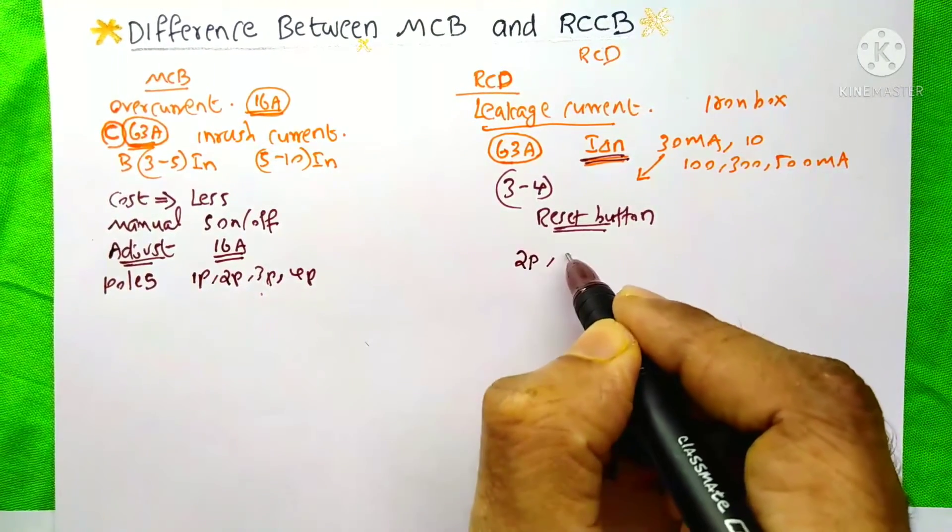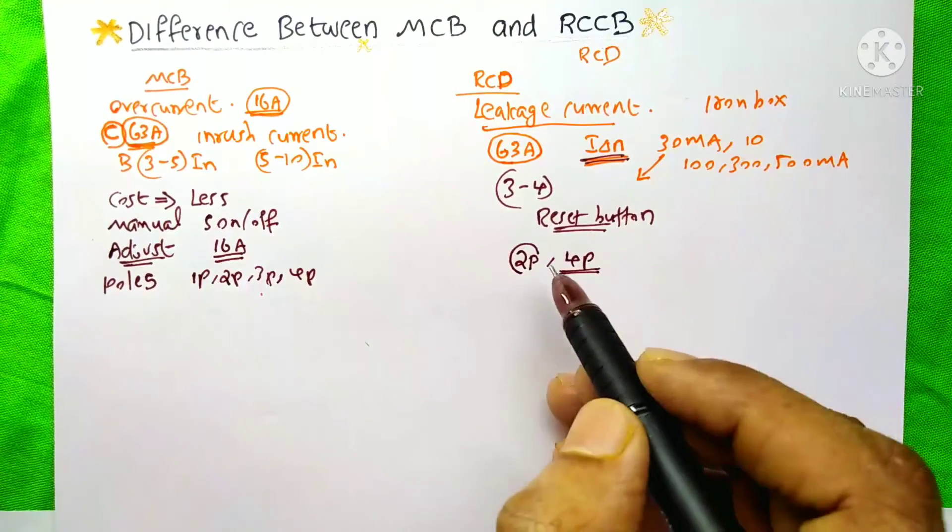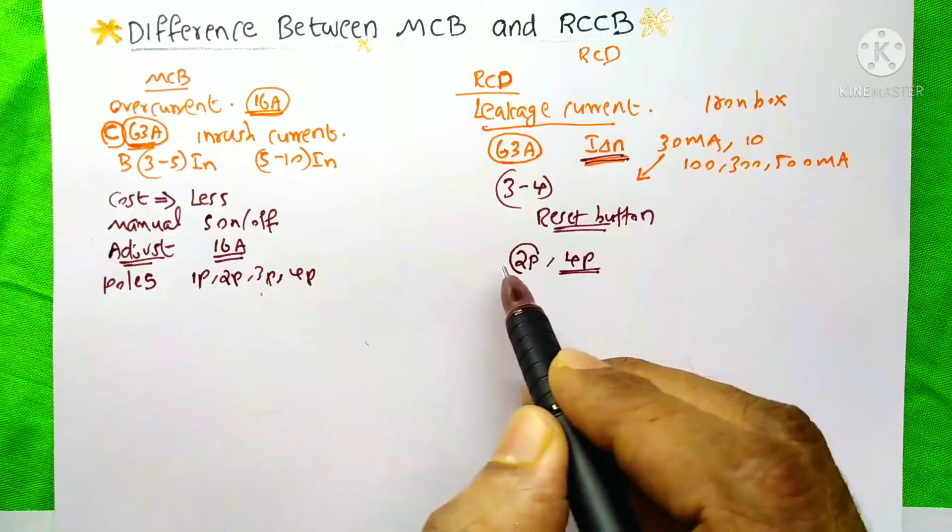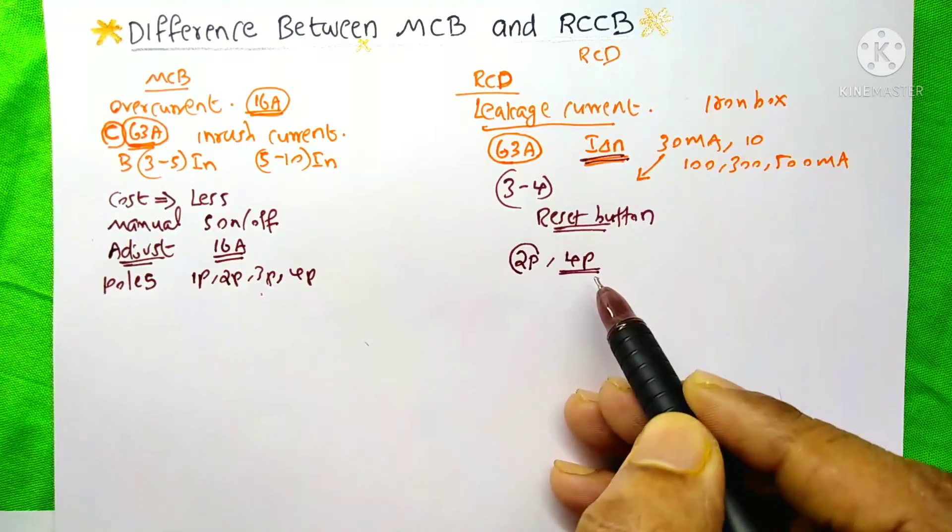Because you know, the RCD is working by sensing the current in neutral and phase. So it needs both the phase and neutral.